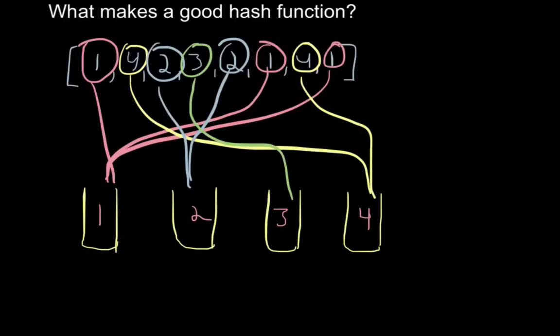And then our 2s look like that, and for the lone 3, there we go. So that's the way that a very basic hash function works.